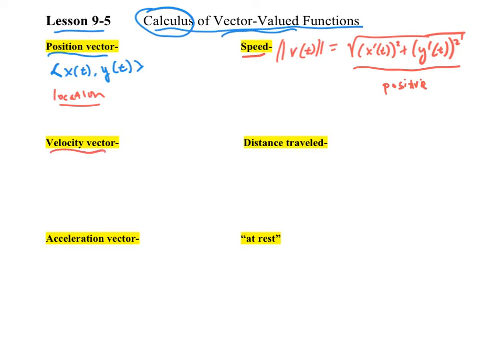Then the velocity vector is x prime of t, y prime of t. Speed comes from the velocity vector. Acceleration vector is similar, just the second derivative of each one of those pieces.